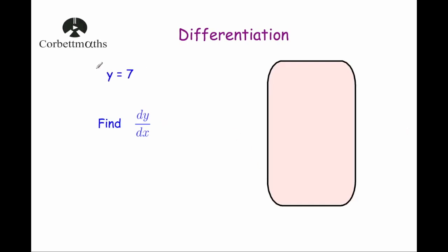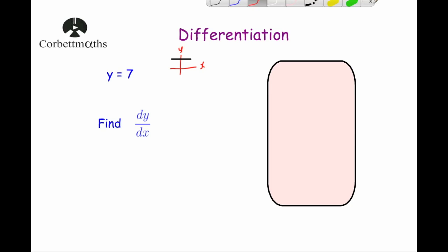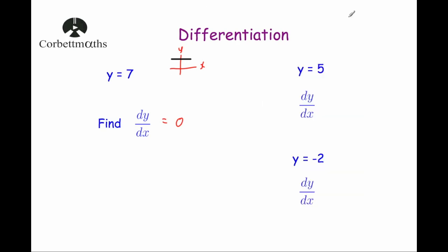Let's look at what happens when we differentiate something like y equals 7. If we sketch that, it's a straight line going through the y axis at 7 with a gradient of 0, because the height is not changing. So dy by dx equals 0. If you have a constant, whenever you differentiate it you always get 0. So differentiating y equals 5 gives dy by dx equals 0, and differentiating y equals minus 2 also gives dy by dx equals 0.